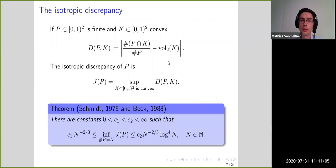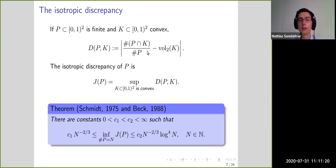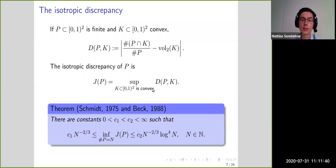For the isotropic discrepancy, we consider convex sets in the unit square which are fully contained in the unit square, count the number of points in the convex set divided by the total number of points, and subtract the area of the convex set. This is a normalized quantity between zero and one. The isotropic discrepancy is the supremum over all convex sets of this deviation.